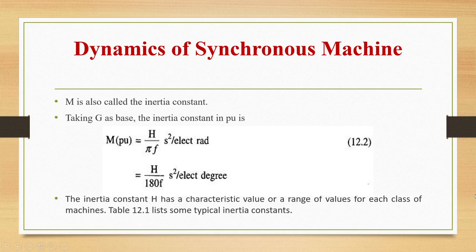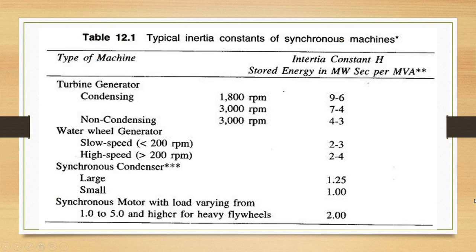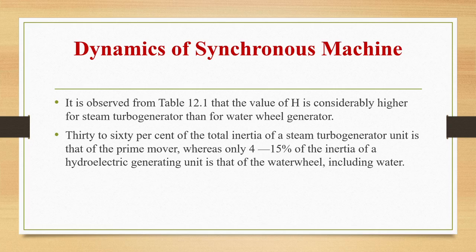The inertia constant H has a characteristic range of values for each class of machine. For turbo-generators (condensing), H = 9–6 for 1800 rpm and 7–4 for 3000 rpm. For non-condensing at 3000 rpm, H = 4–3. Water wheel generators have H = 2–3 (slow speed) and 2–4 (high speed). Synchronous condensers have H = 1.25 (large) and 1 (small). Synchronous motors with varying loads have H around 2. The value of H is much higher for steam turbo-generators than for water wheel generators. About 30–60% of the total inertia of a steam turbo-generator unit is the prime mover, whereas only 4–15% of the inertia of a hydroelectric unit is the water wheel including water.